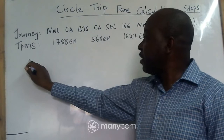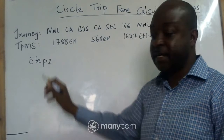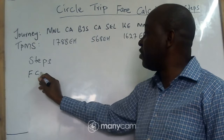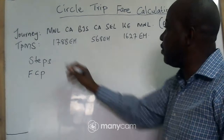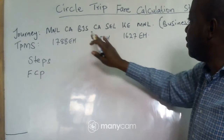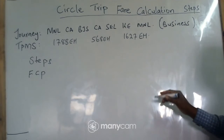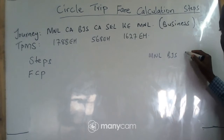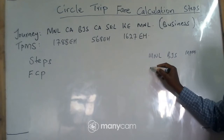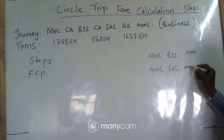We are going to use this information and then we have our steps here. The first step is what you call the fare construction point. We need to know the origin and the destination so that we can calculate the fare correctly. Our journey is Manila to Beijing to Seoul to Manila. We arrange from origin to intermediate and look for the MPM. So Manila to Beijing — we look for the MPM — and then Manila to Seoul, we also look for the MPM.